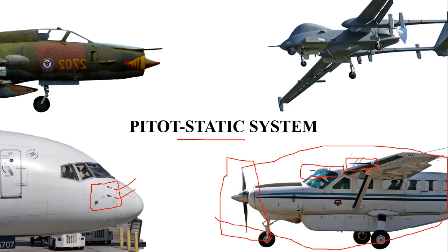For a UAV — unmanned aerial vehicle — the pitot static tube is placed on the nose portion of the aircraft. For a fighter jet it is also placed in the forward portion of the aircraft in the nose region. This is a supersonic fighter jet, as the nose cone shape indicates.